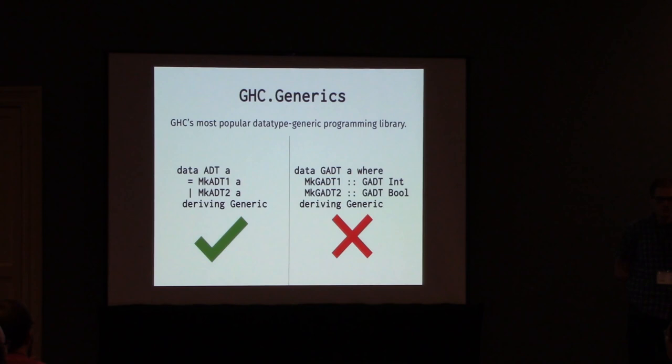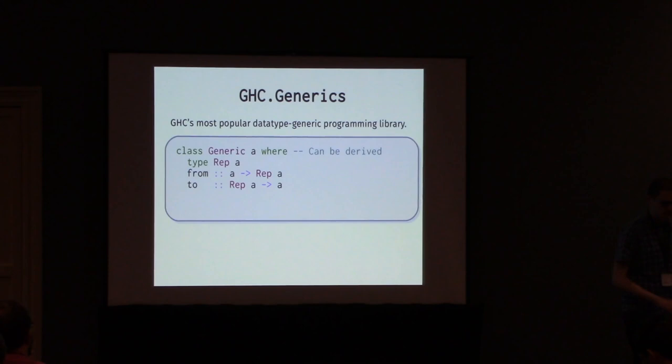I want to take a look into why that currently isn't possible today and what we can do to fix this. I have a sort of a mock design of how you might accomplish this in a way that would be backwards compatible with all the code in the wild that uses GHC generics today. GHC generics will be a bit difficult to follow if you don't at least have a passing familiarity with what it is, so I'm going to very quickly give you a primer of what this is all about and how you can use it.